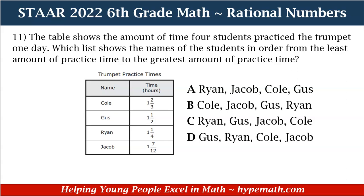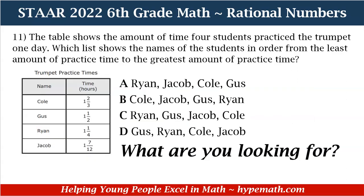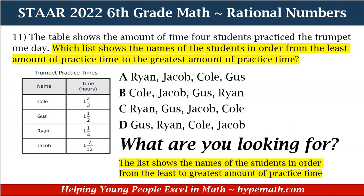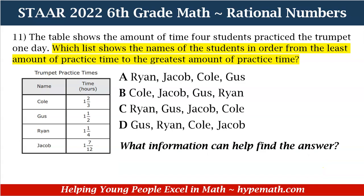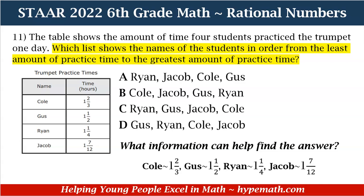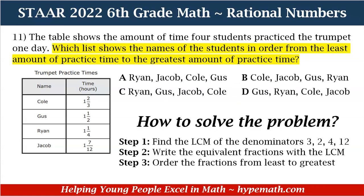So in order to solve this problem, the first thing we need to ask ourselves is: what are we looking for? We are looking for the list that shows the names of the students in order from the least to greatest amount of practice time. The information that can help us find the answer is the times that the students practiced: Cole 1 and 2 thirds, Gus 1 and 1 half, Ryan 1 and 1 fourth, Jacob 1 and 7 twelfths. We're going to use the steps like we did in our examples. Step 1: find the LCM of the denominators 3, 2, 4, and 12. Step 2: write the equivalent fractions with the LCM or LCD. Step 3: order the fractions from least to greatest.